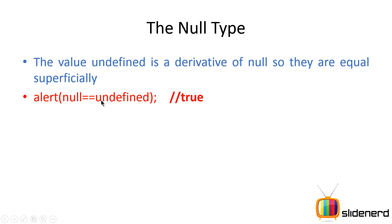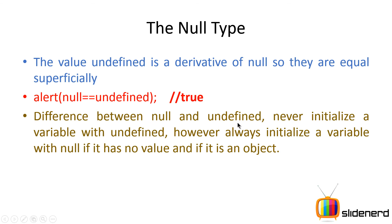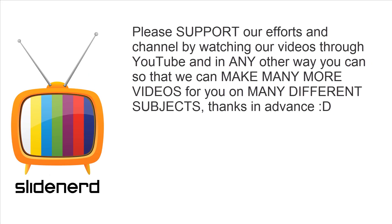When you compare null == undefined, it always returns true, because logically both indicate that a variable contains meaningless information. However, the key difference is this: never initialize a variable with undefined — the purpose of undefined is to detect undeclared variables. Always initialize a variable with null if it has no meaningful value and is supposed to hold object-type data. typeof null returns 'object'.